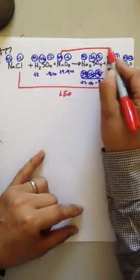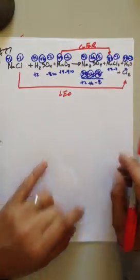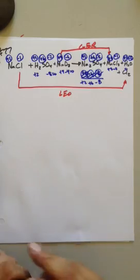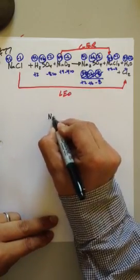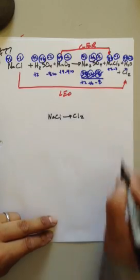Alright, hydrogen's the same, sulfur plus six to plus six, that's the same, oxygen the same, manganese plus four to plus two. That is gaining electrons. Alright, so let's just start there and things will sort themselves out as we do it step by step.